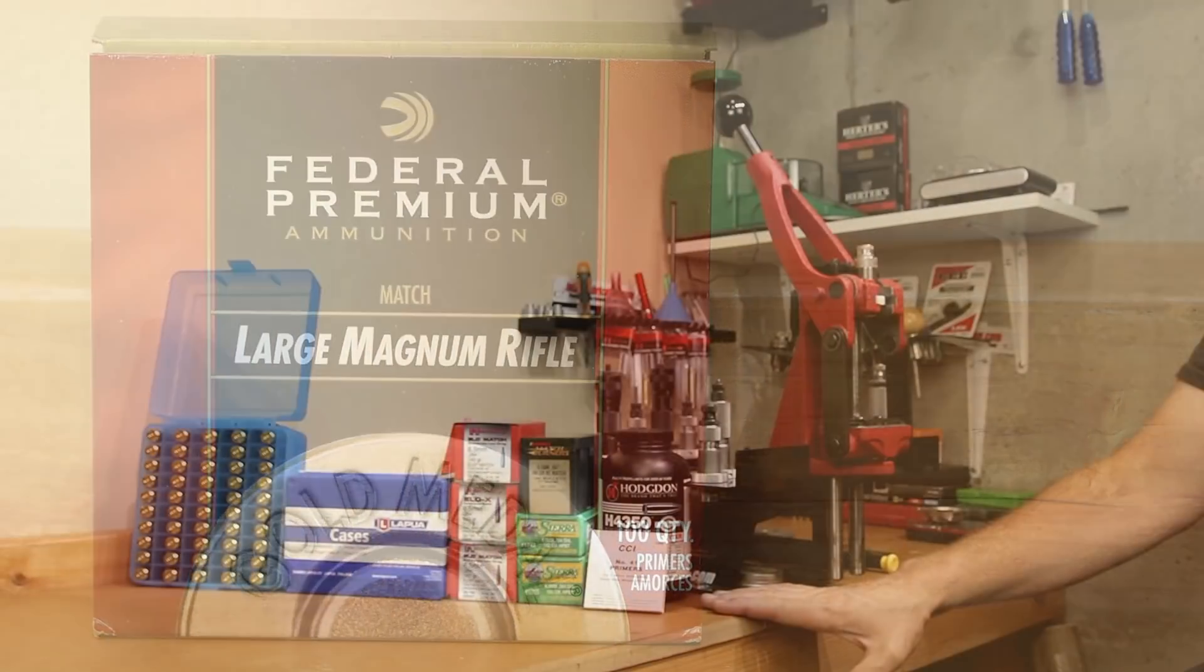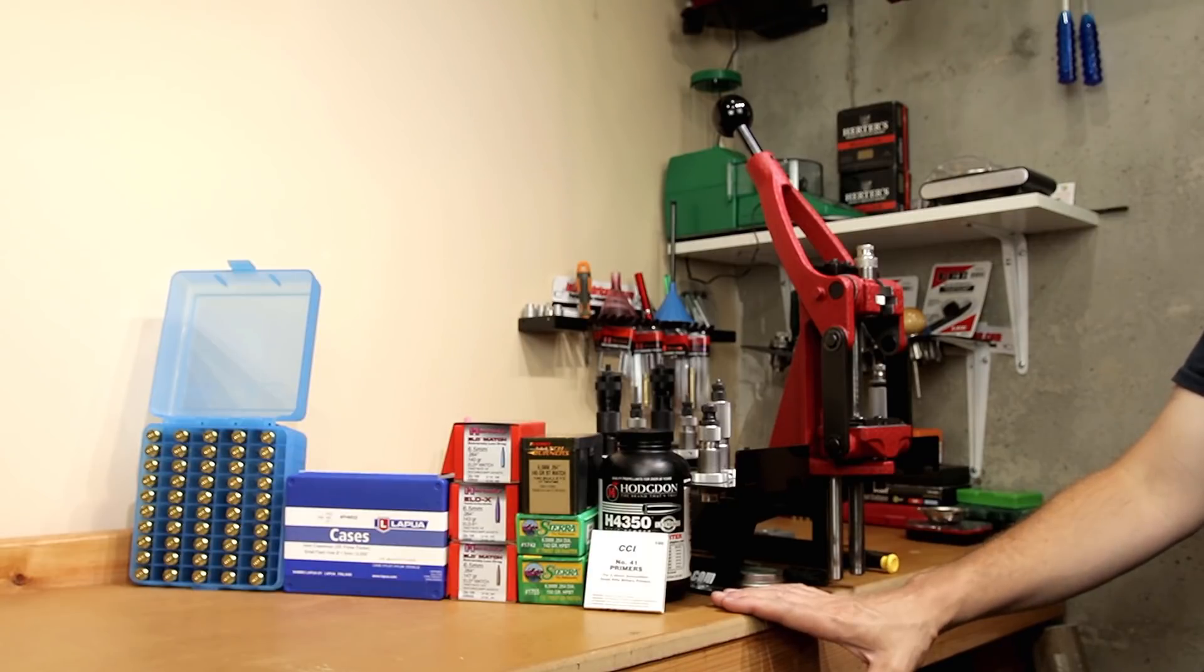Now, 41.3 grains was the charge weight we actually used for everything today. I wanted to keep things as consistent as possible, though we're going to get into the exact load data as we move along.